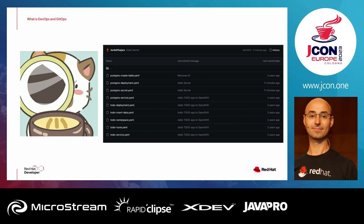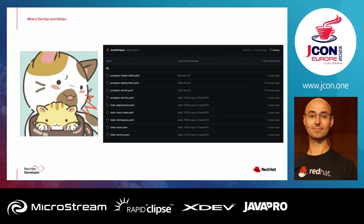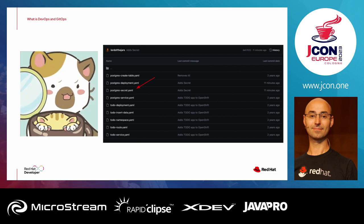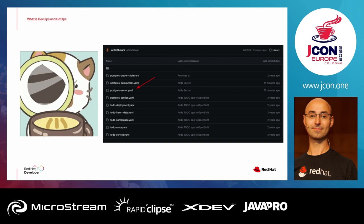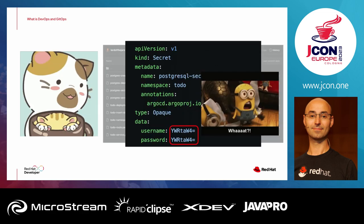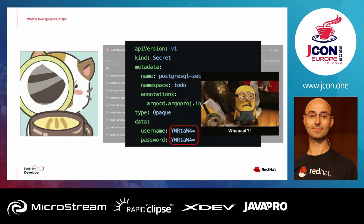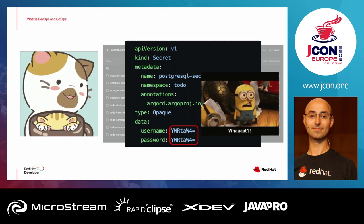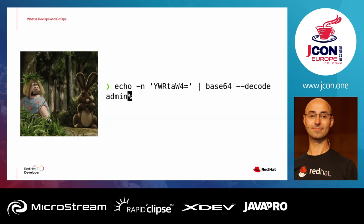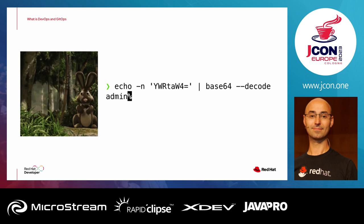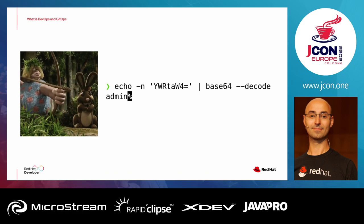Looking at the data repository, I have YAML files for PostgreSQL and the application, including a secret with username and password. Inside the Kubernetes secret, you see the data fields contain username and password — but this looks insecure. That's because Kubernetes secrets are not encrypted, they're only base64 encoded. You can run echo with base64 decode and get the plain value 'admin'. Kubernetes secrets are named secrets, but they are not actually secret.